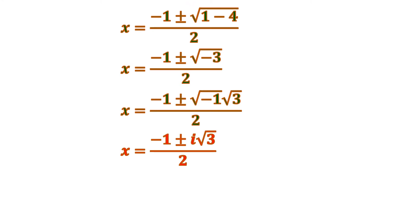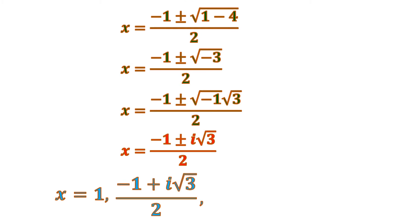So the result is negative 1 plus or minus i times square root of 3, all over 2. There are two roots from the plus and the minus. So the values of x that make the polynomial 0 are: first, x equals 1; second, x equals (negative 1 plus i root 3) over 2; and third, x equals (negative 1 minus i root 3) over 2. Those are the three roots of our polynomial equation.